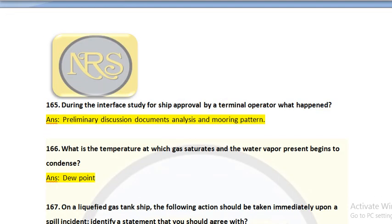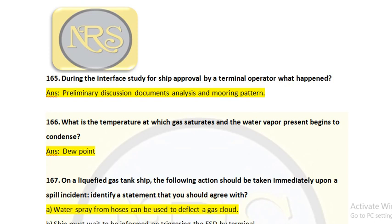Question number 165: During the interface study for ship's approval by a terminal operator, what happens? The answer is preliminary discussions of document analysis and mooring pattern. The terminal operator will check the mooring pattern. This preliminary discussion covers how to do the mooring operation, what the document analysis states, where the tank is, where the manifold is, how to connect, how to purge, and how to do the cool-down process.